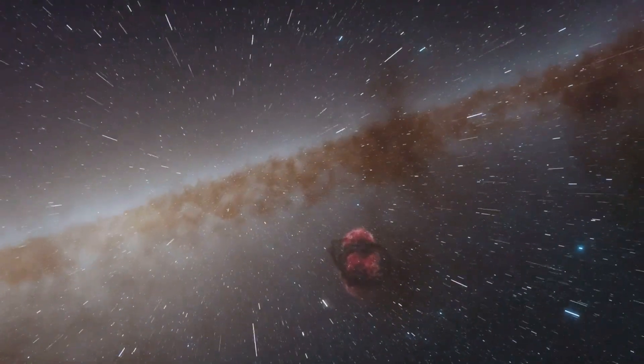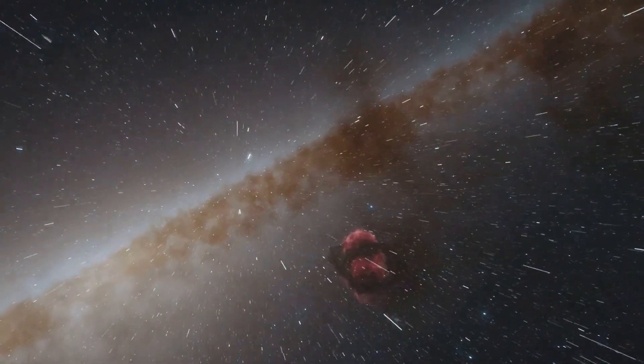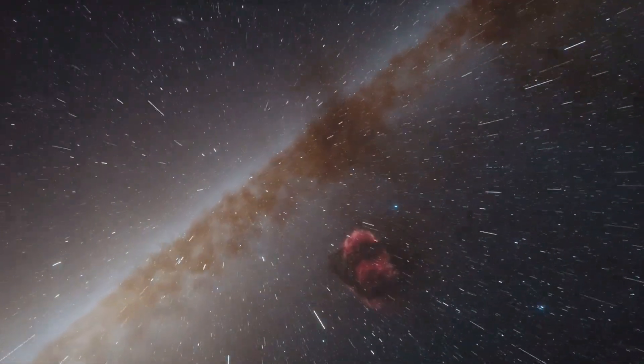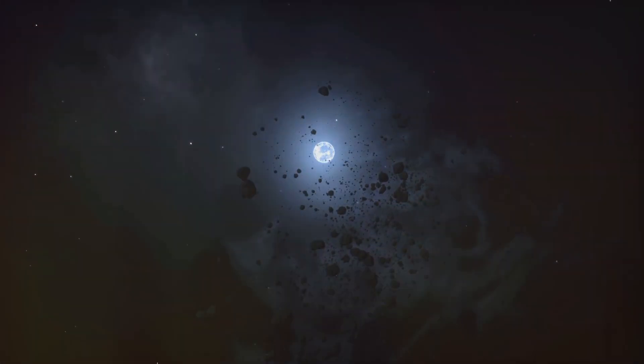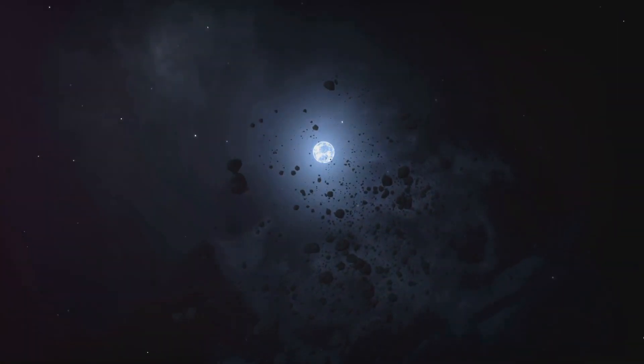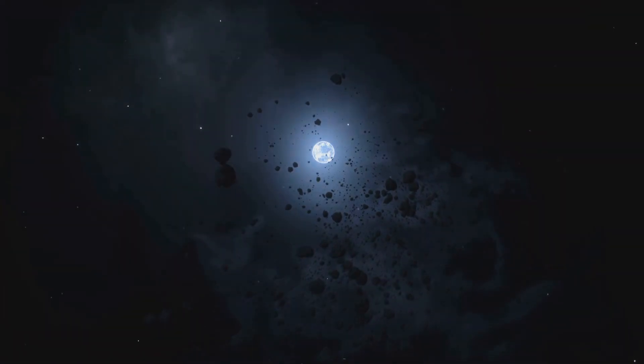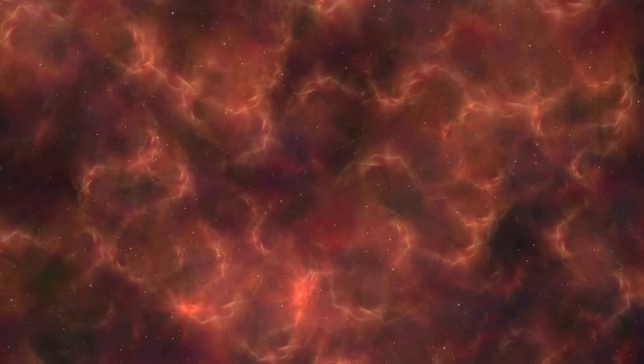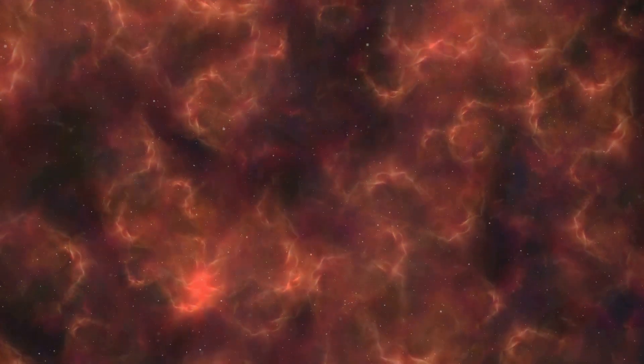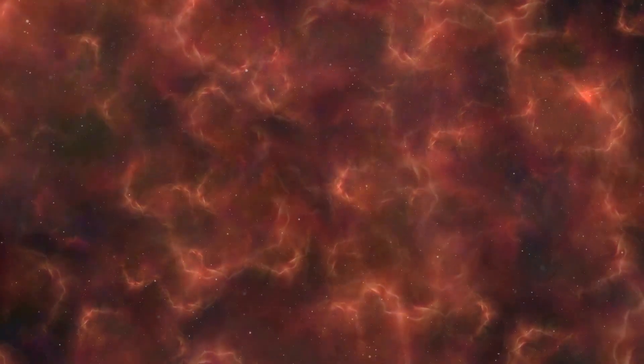In one trillion years, the last red dwarfs will exhaust their hydrogen fuel, marking the end of an era. They will slowly contract, eventually fading into white dwarfs, cooling and dimming over eons. The universe will then be truly devoid of starlight, a dark and silent expanse.